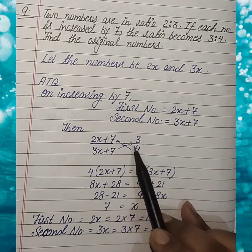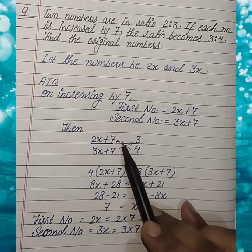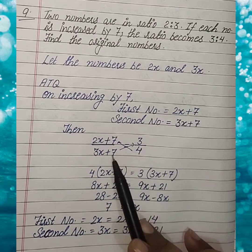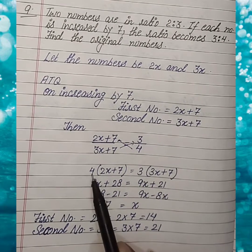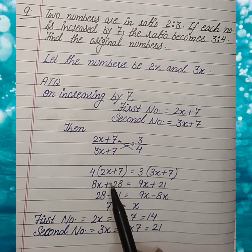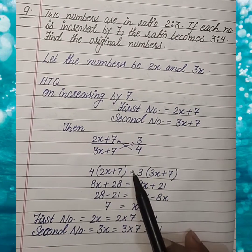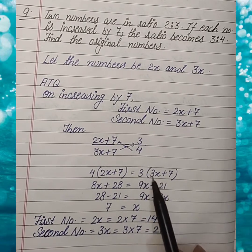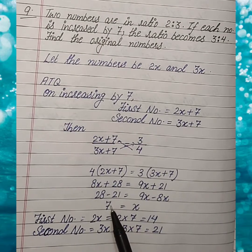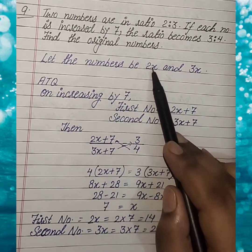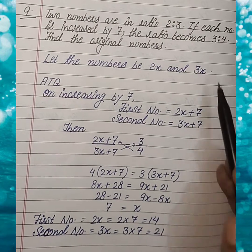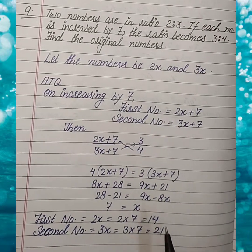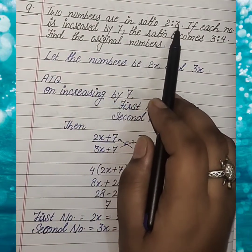By cross multiplication we get 4 multiplied by 2X+7 equal to 3 multiplied by 3X+7. So 8X plus 28 equals 9X plus 21. Solving this linear equation gives X equal to 7. So the first number is 2X = 2 into 7 = 14, and the second number is 3X = 3 into 7 = 21. So 14 and 21 are the two numbers which are in ratio 2:3.